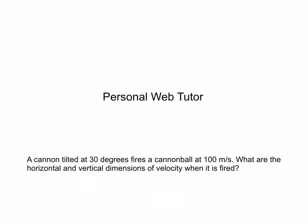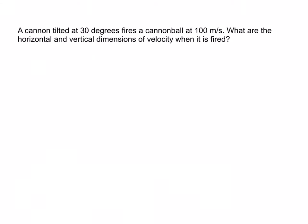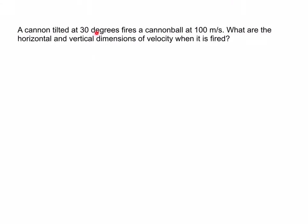Welcome to Personal Whip Tutor. Today we've got a cannon. A cannon is tilted at 30 degrees and fires a cannonball at 100 meters per second. What are the horizontal and vertical dimensions of the velocity when it is fired?